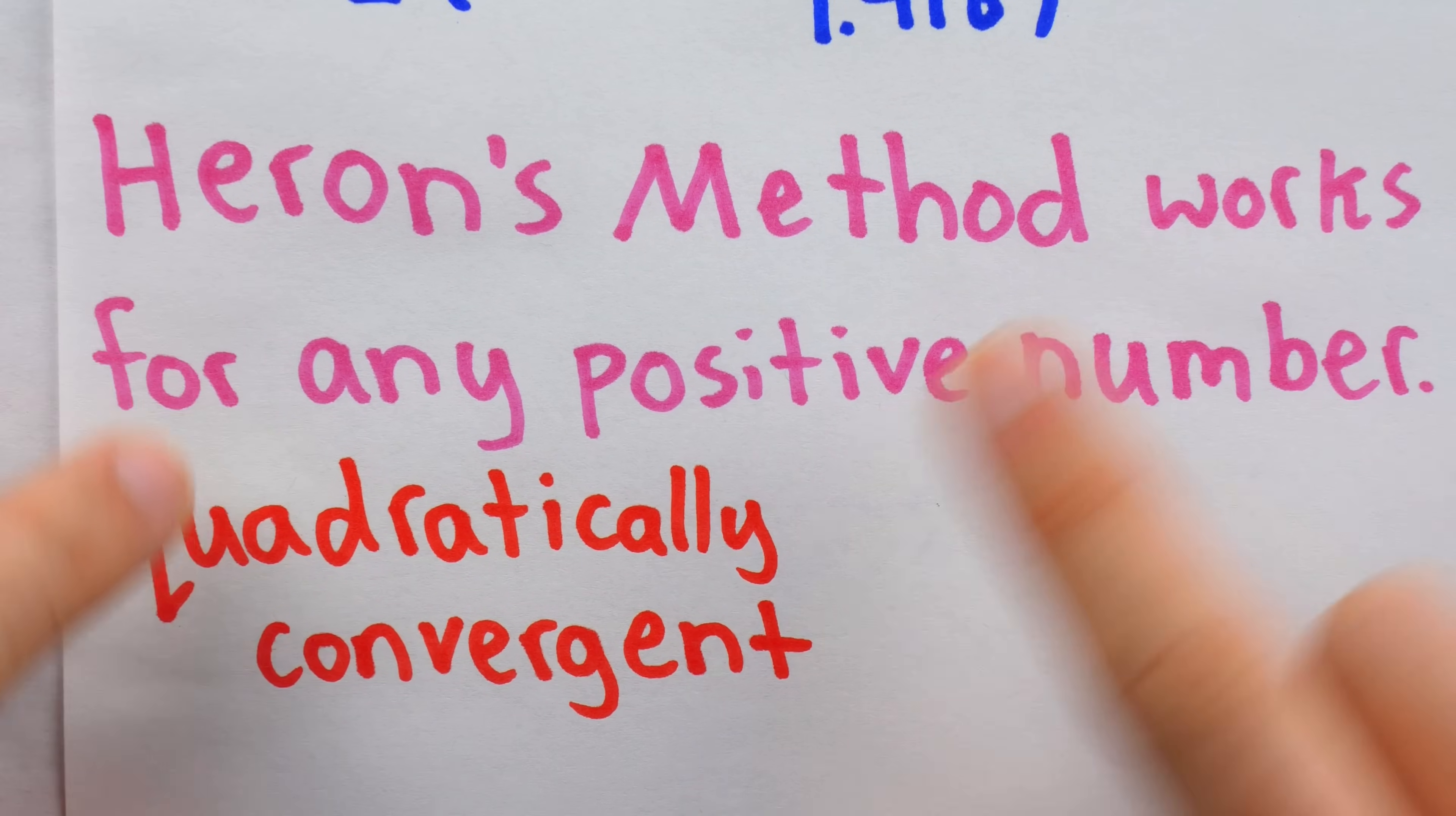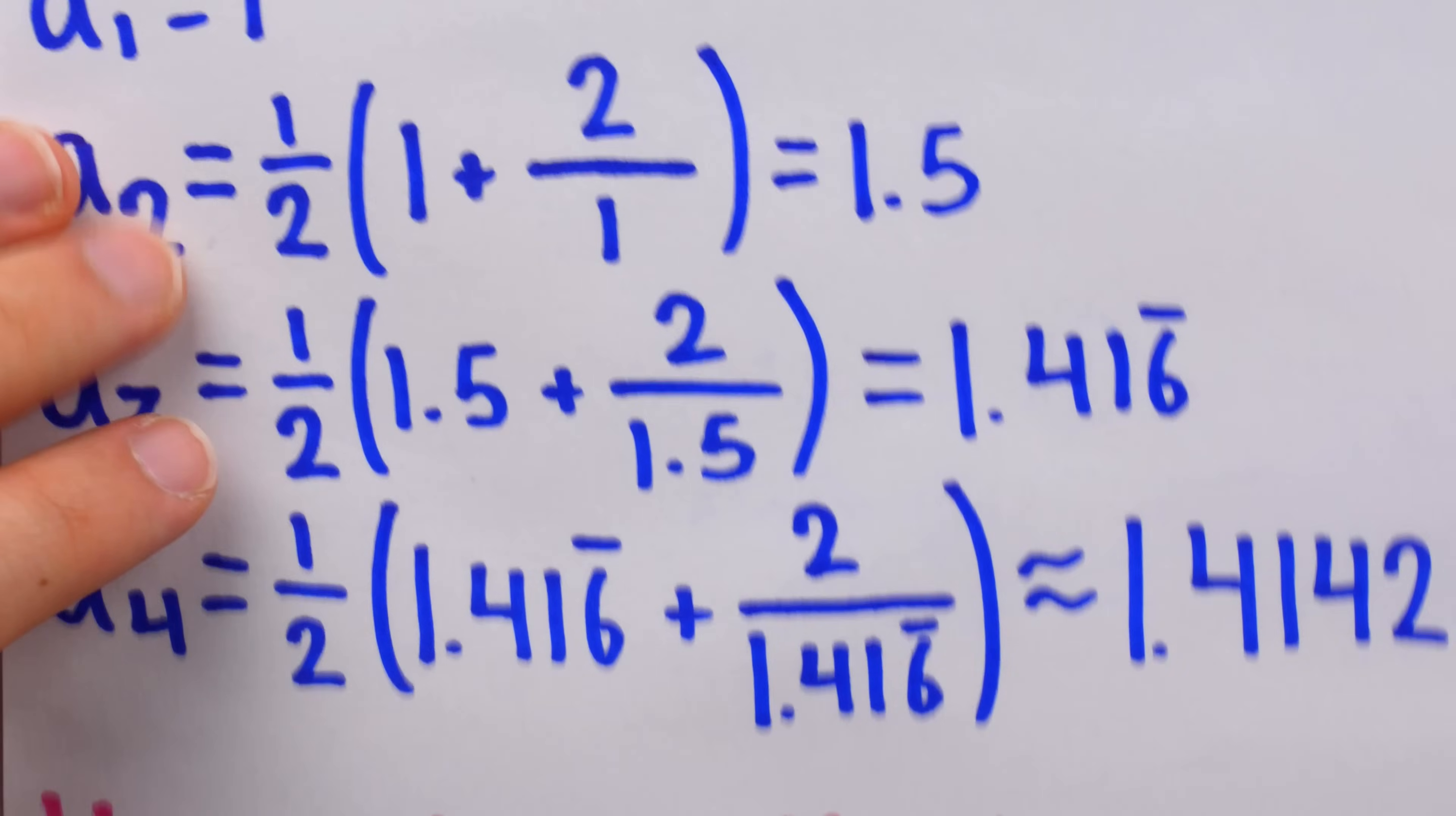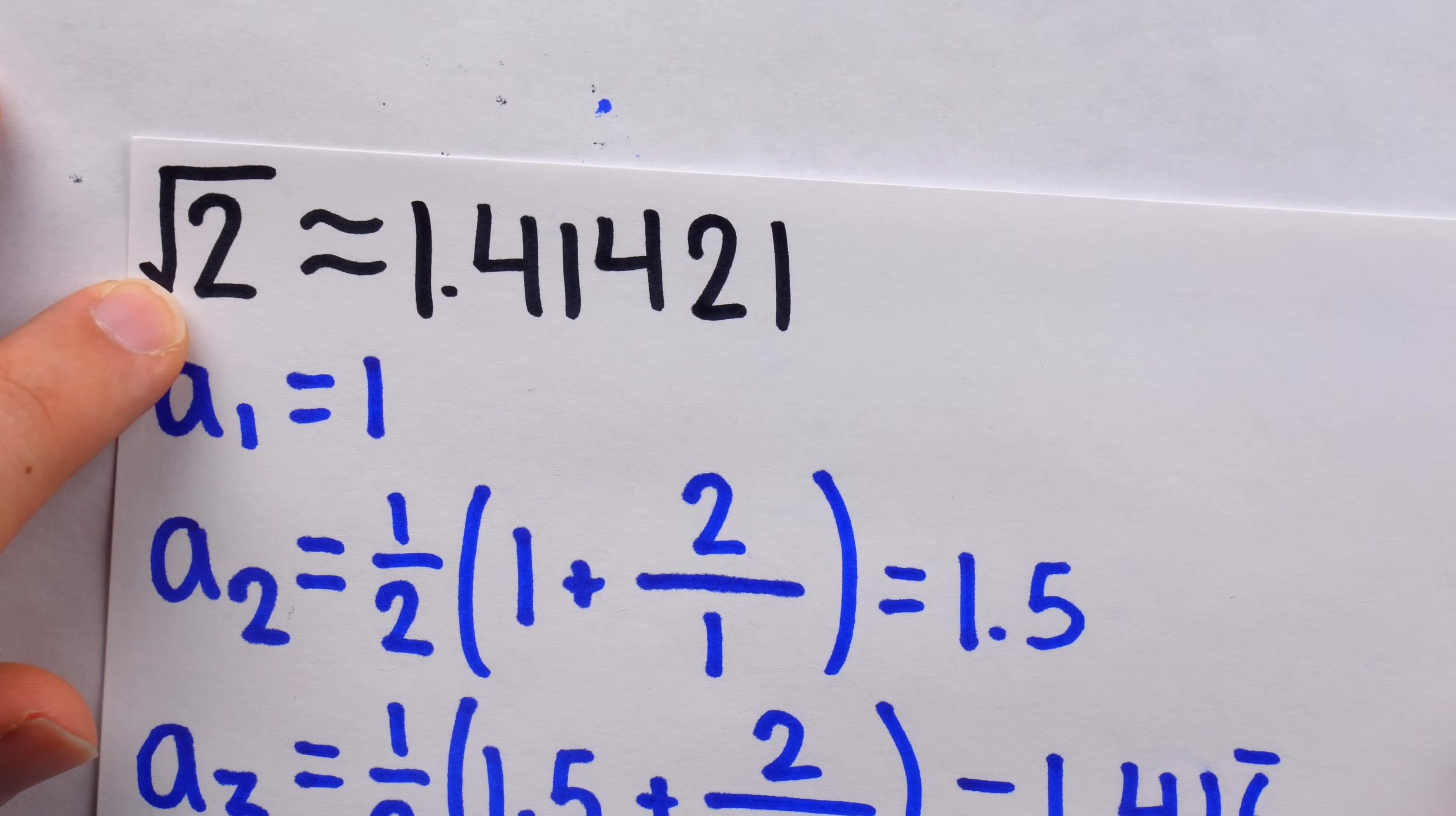Alright, so I'm telling you it works, I'm telling you it works well, and intuitively, it makes sense. But how can we be sure that applying Herron's method can get us arbitrarily close to the square root that we desire?